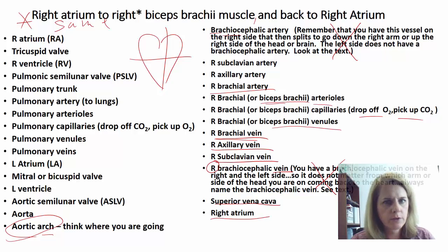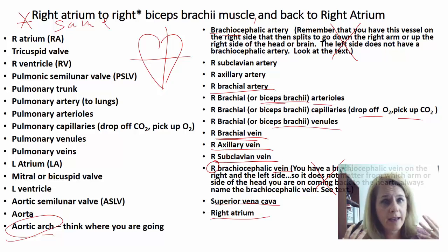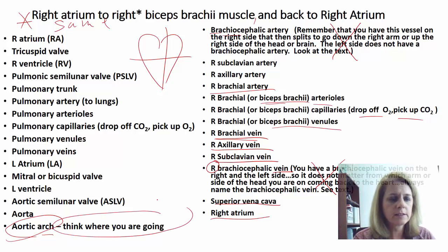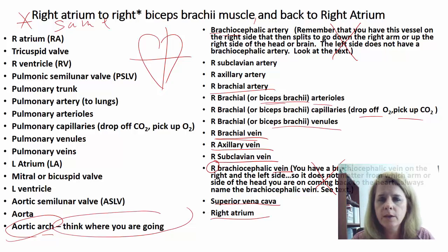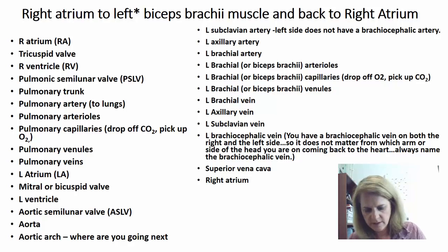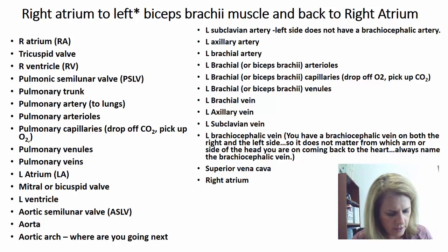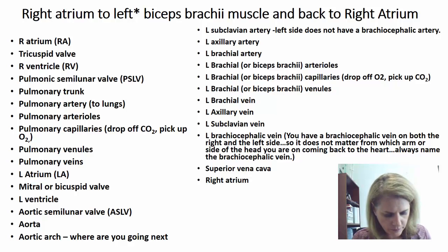To summarize the approach: read the question, figure out where you're going, draw your heart, always trace through the heart first. At the aorta decide — am I going to the head and arms, the chest, the abdomen, or the legs? That tells you which parts of the aorta you pass through and which branches to take. Always note left vs. right — draw a picture before you write the answer.